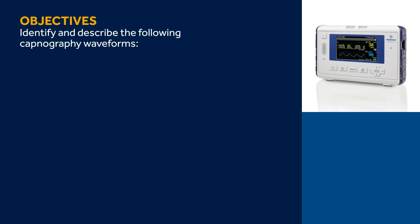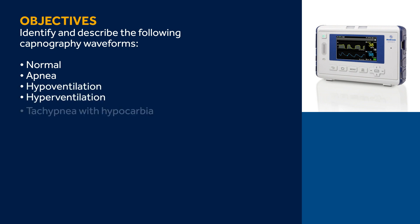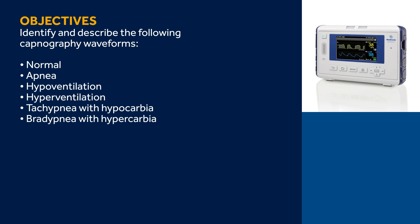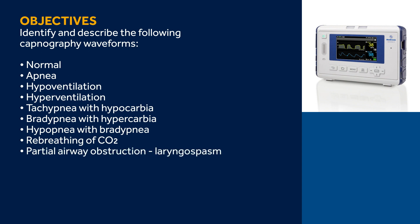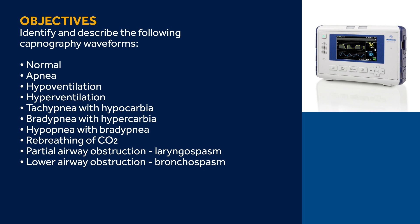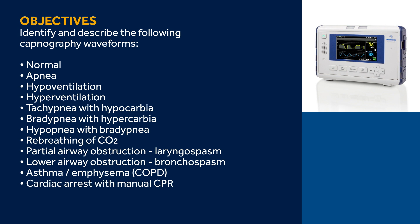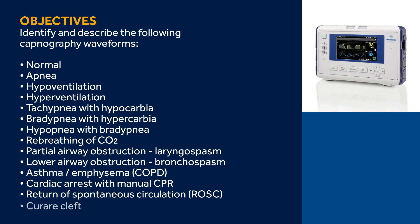Capnography Waveforms. The objectives of this lesson are to identify and describe the following time-based CO2 capnography waveforms: Normal, Apnea, Hypoventilation, Hyperventilation, Tachypnea with hypocarbia, Bradypnea with hypercarbia, Hypopnea with bradypnea, Rebreathing of CO2, Partial airway obstruction and laryngospasm, Lower airway obstruction and bronchospasm, Asthma and emphysema, Cardiac arrest with manual CPR, Return of spontaneous circulation, and Curare cleft.